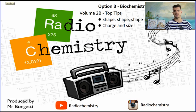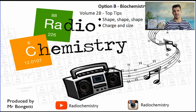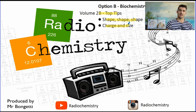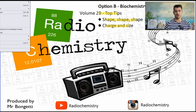Okay volume 2B some top tips. When we talk about enzyme it's all about shape, shape, shape. When we talk about the interactions we talk about the charge and the size. When we talk about electrophoresis we talk about the charge and the size of the amino acids. Thanks for watching guys. Don't forget drop a like on the video, subscribe if you're new, and I'll see you next time.